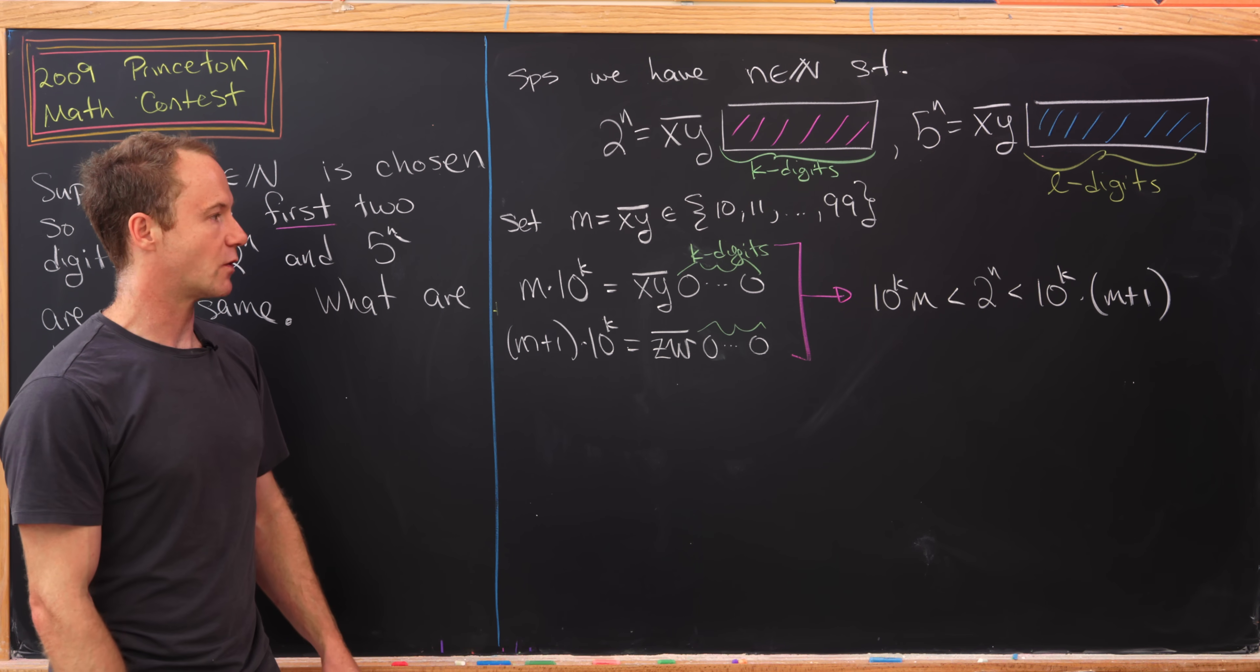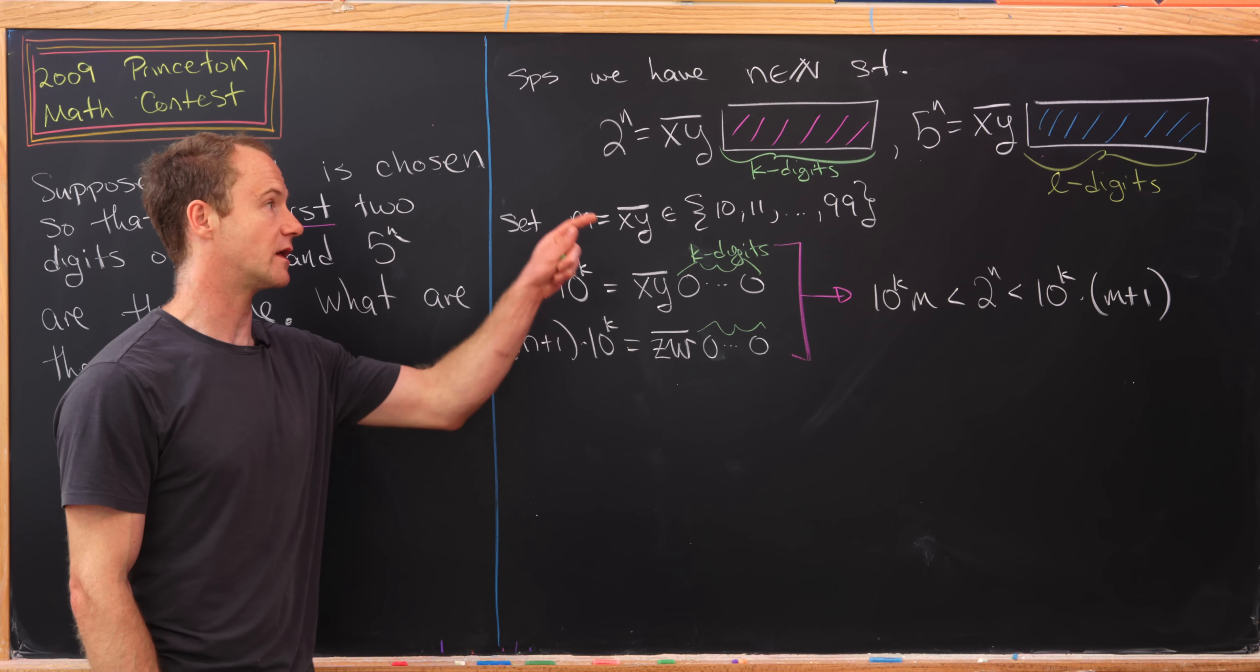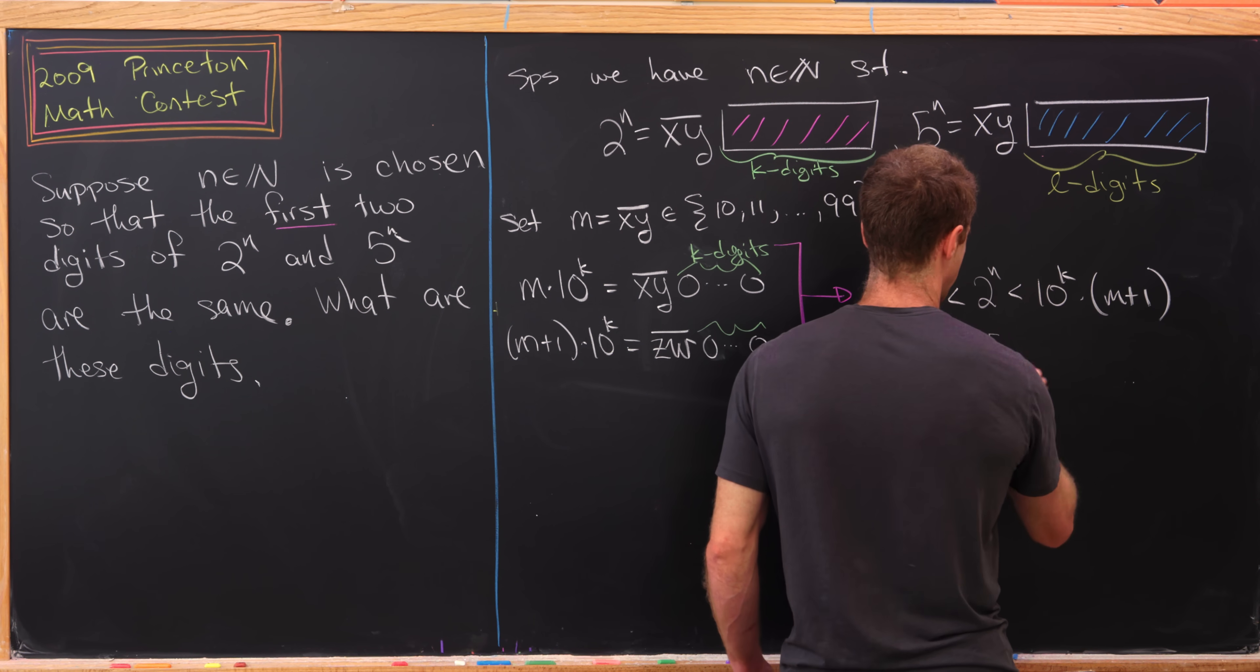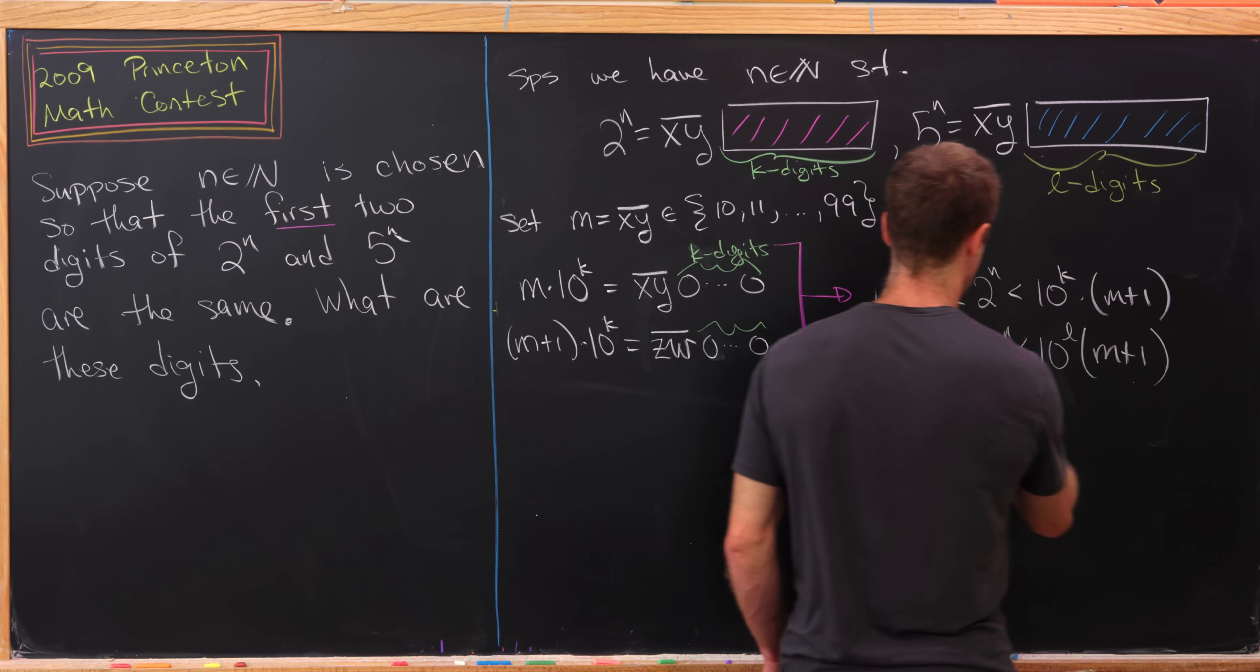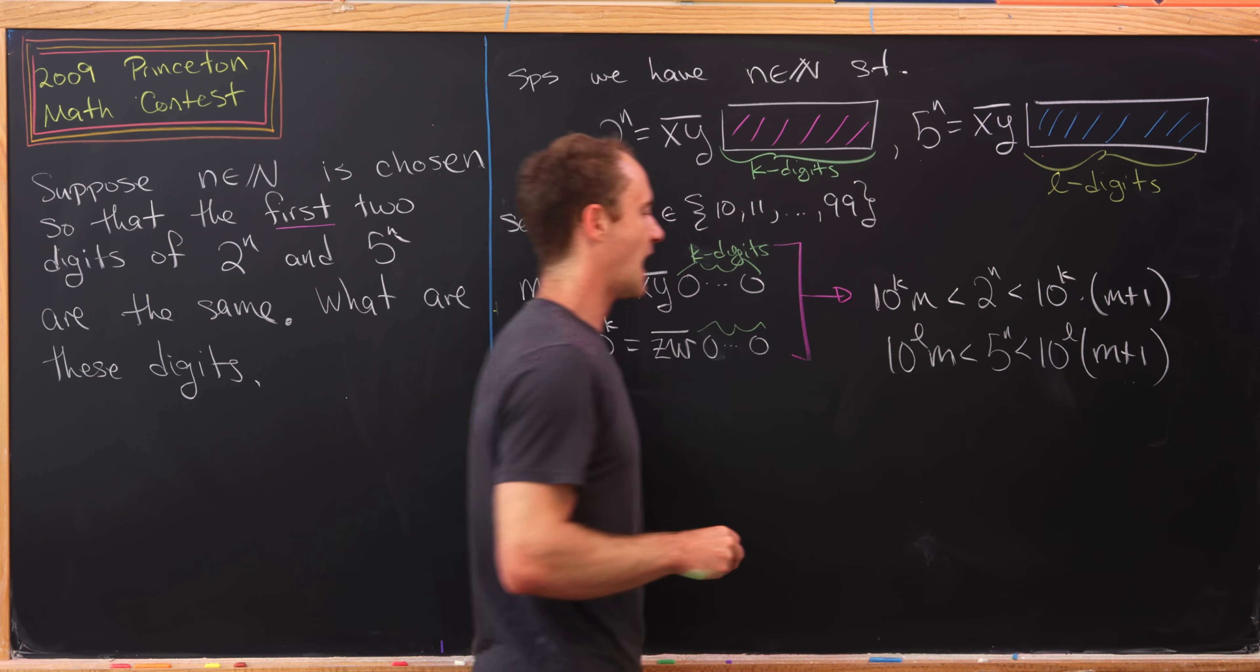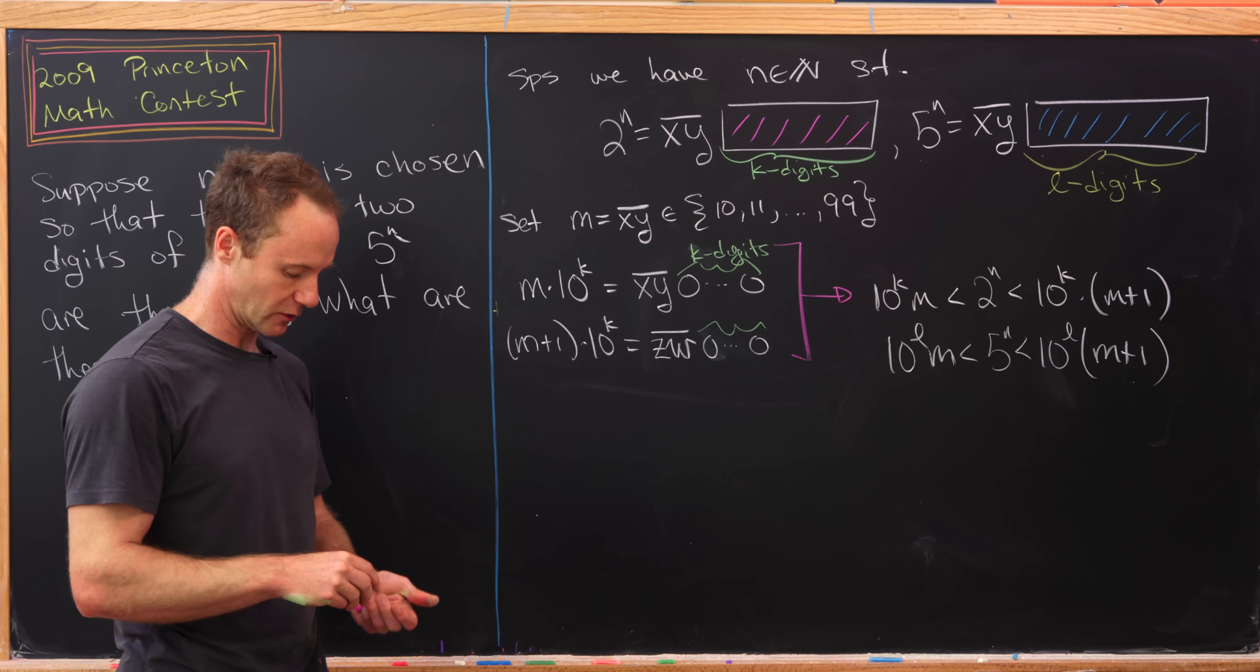We can grab a really similar inequality dealing with 5^n. That'll give us 5^n is strictly less than 10^l times (m+1), but strictly bigger than 10^l times m. That's exactly in parallel to what we did with that power of two.